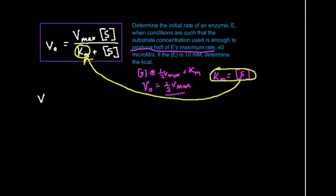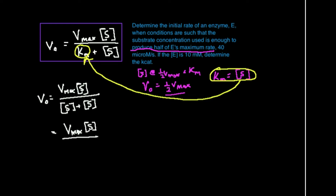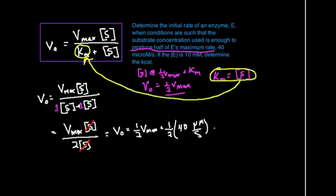So our initial rate is equal to Vmax times the substrate concentration divided by — making the substitution — Km equals substrate concentration, plus substrate concentration. This equals Vmax times substrate concentration divided by two times the substrate concentration. The substrate concentrations cancel, meaning the initial rate is one half of the Vmax. The Vmax is 40 micromolar per second, so our initial rate is one half of 40, which is 20 micromolar per second.